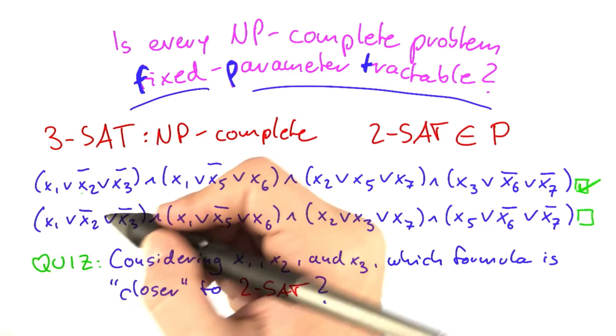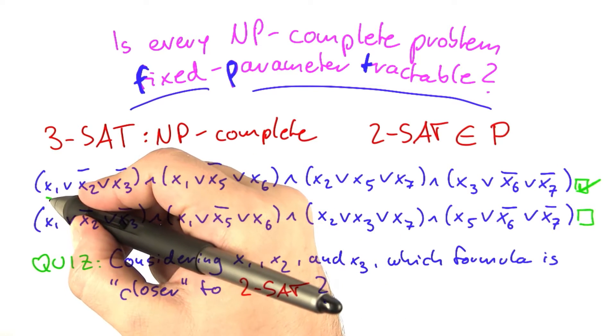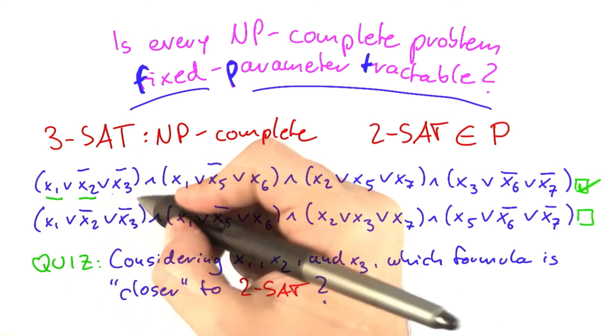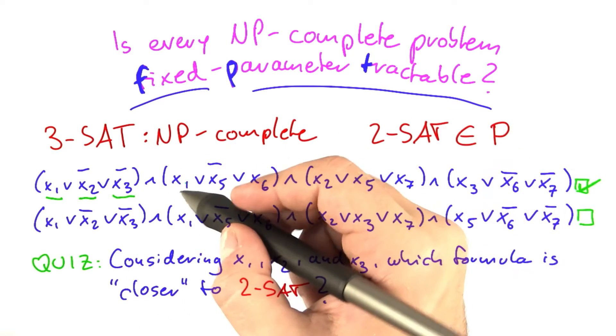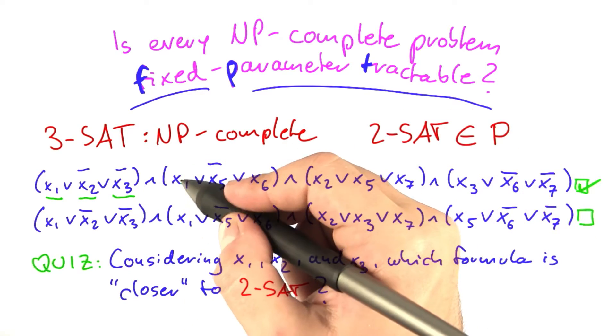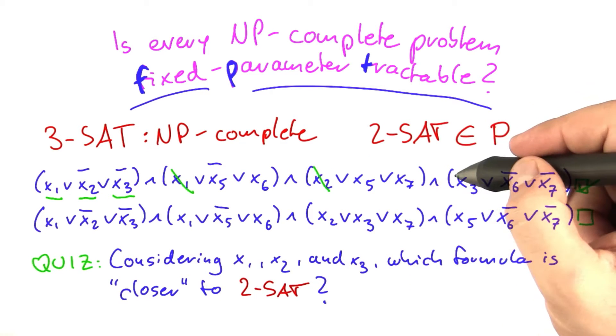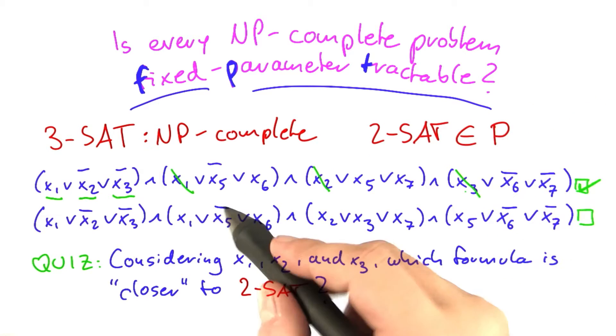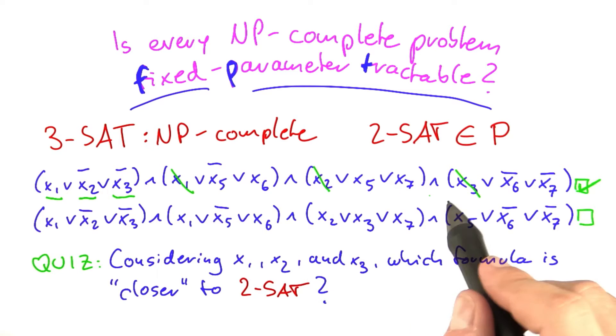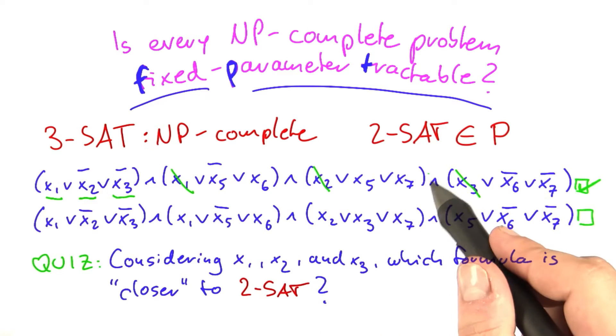So my point here is basically this. If you have decided what you're going to do with x1, x2, and x3, then the following thing happens. You've already decided what you're going to do with x1, you've already decided what you're going to do with x2, and you've already decided what you're going to do with x3. And in that case, what remains is an instance of 2-SAT, and that is solvable in polynomial time.